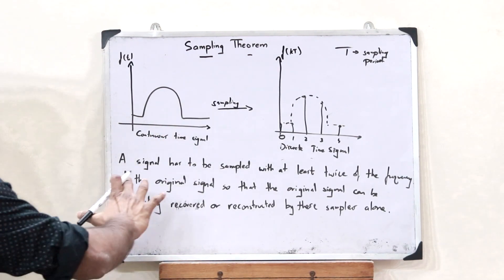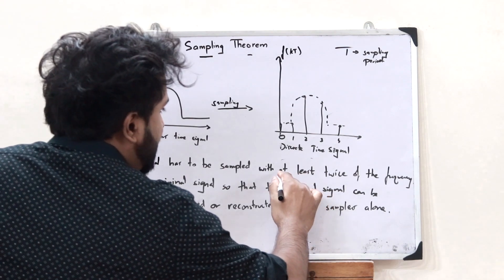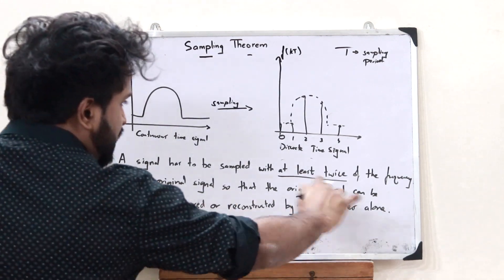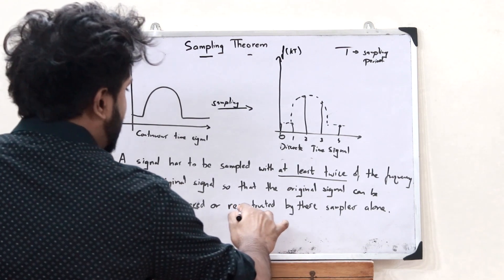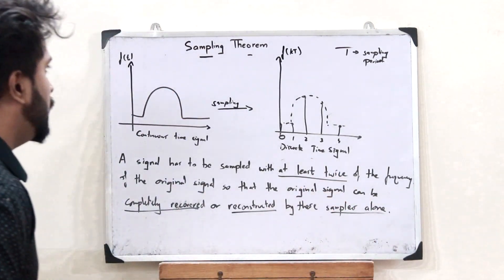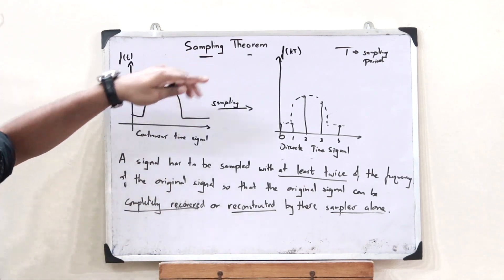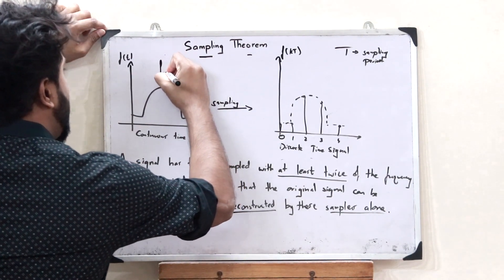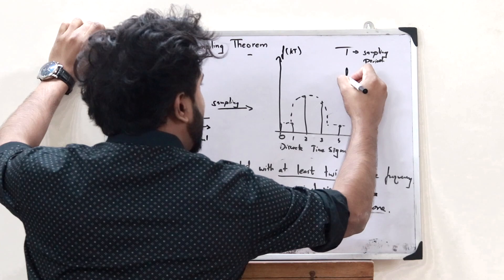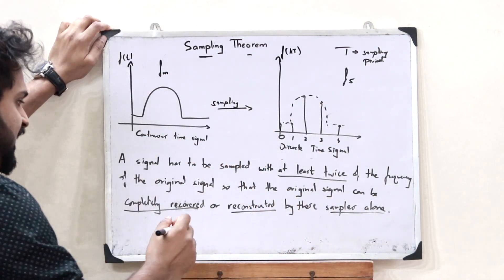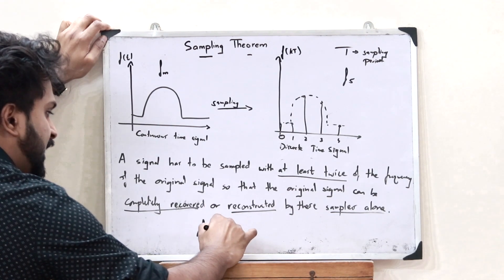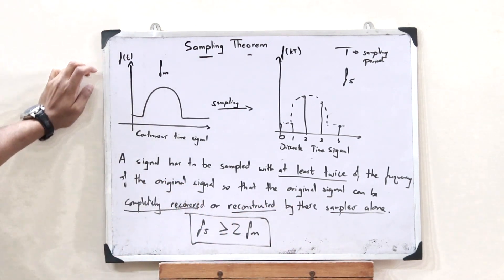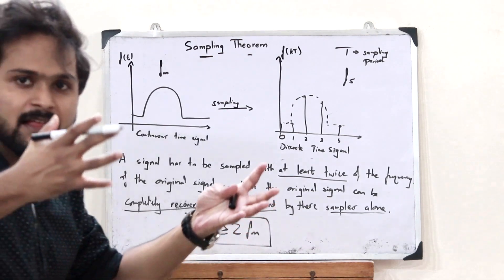According to sampling theorem, a signal has to be sampled with at least twice of the frequency of the original signal so that the original signal can be completely recovered or reconstructed by just these samples alone. So here, if the maximum frequency is fm and the sampling frequency is fs, then what we simply state is that fs must be greater than or equal to twice of fm. This is simply what we refer to as sampling theorem.